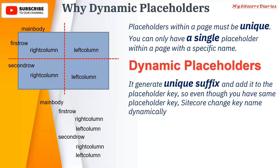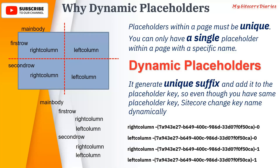Developers create the placeholders and authors design the pages. The author doesn't know what's happening in the background — he just adds 'right column' twice in the Experience Editor, but dynamic placeholder generates unique keys. For example, 'right-column-0' and 'left-column-0'. That is why we need dynamic placeholders — you cannot add the same static placeholder key twice on a page.